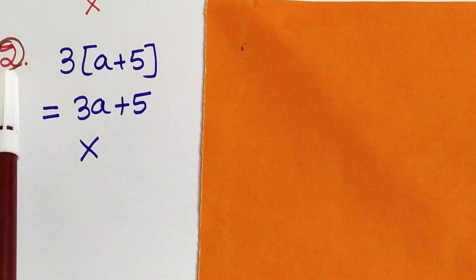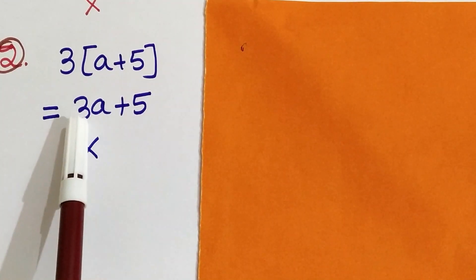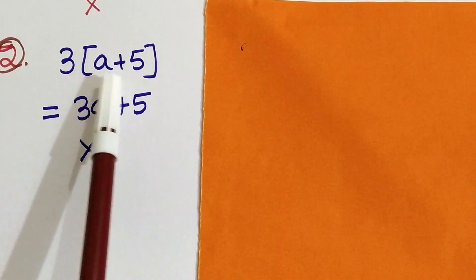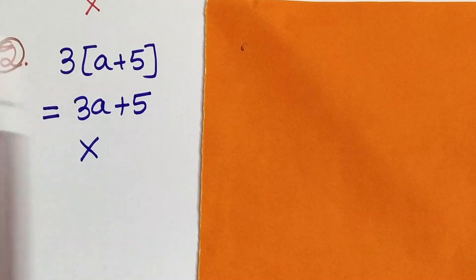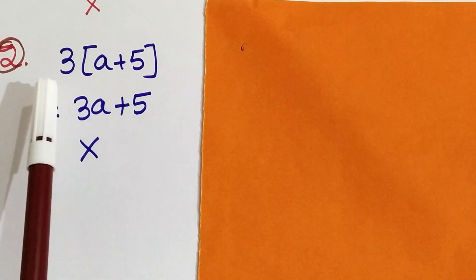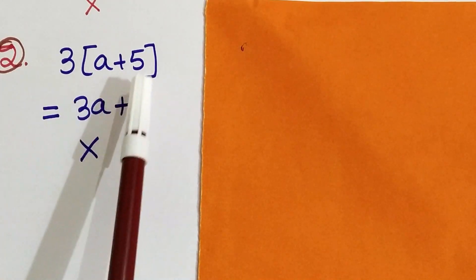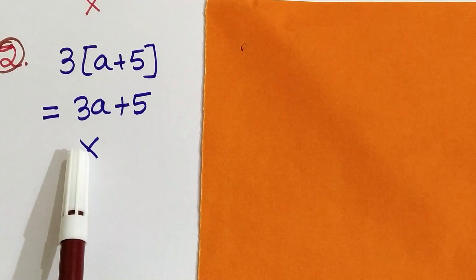Second question: 3 into (A plus 5) equals 3A plus 5. Here, (A plus 5) is multiplied by 3. So students write 3 into A is 3A, plus 5. This is a wrong procedure.